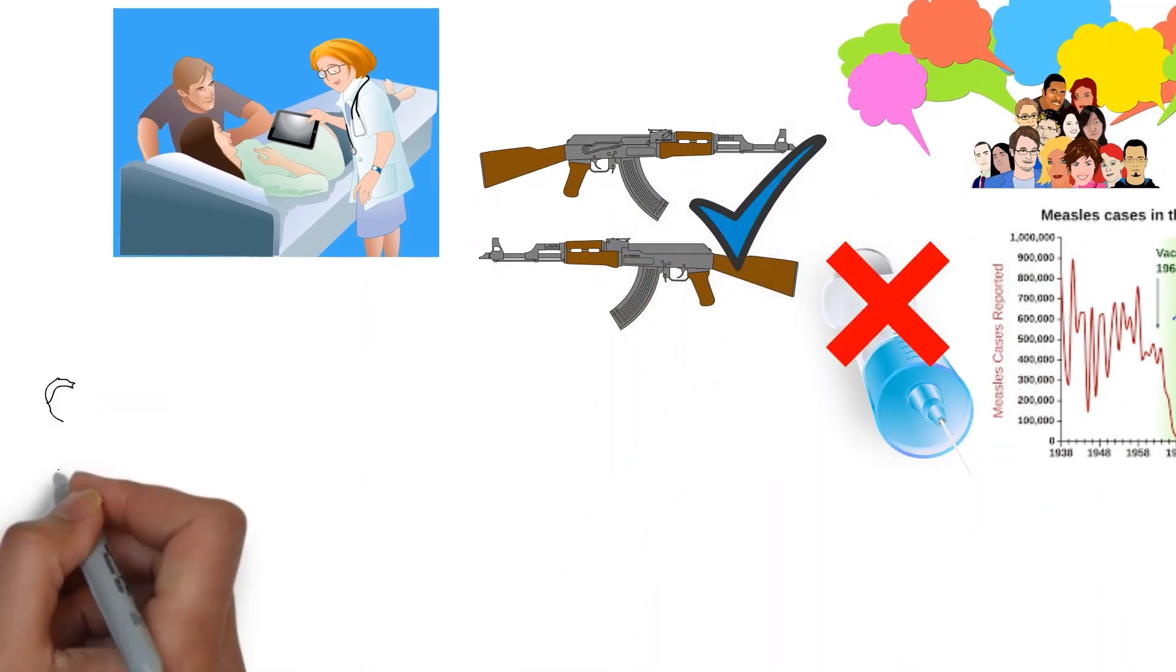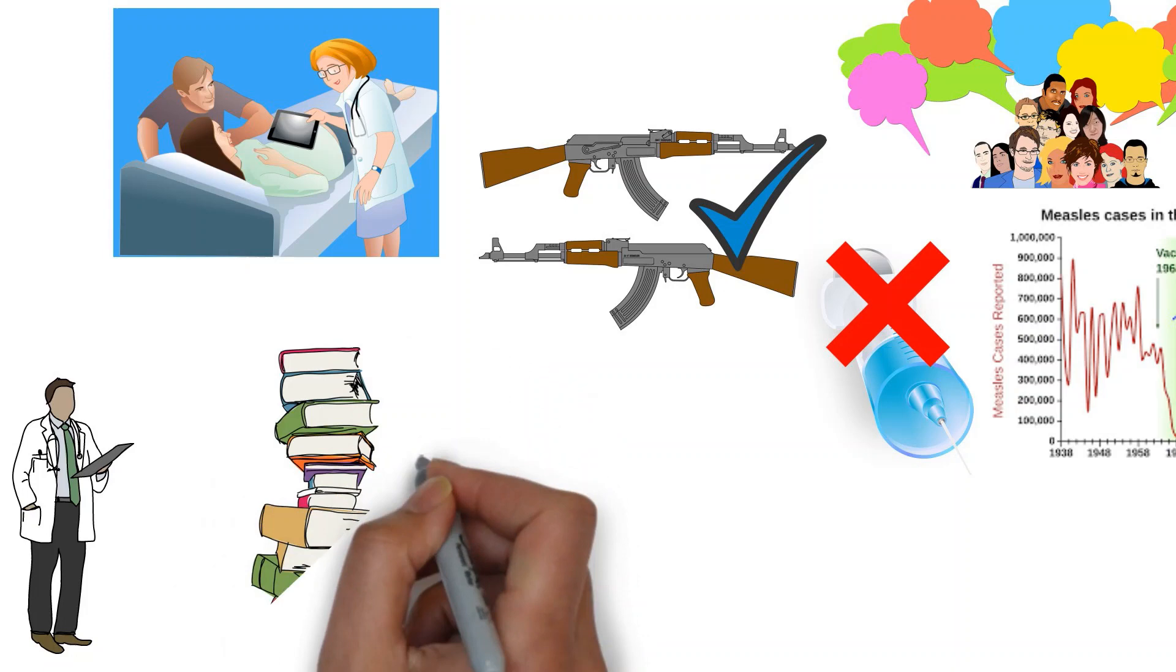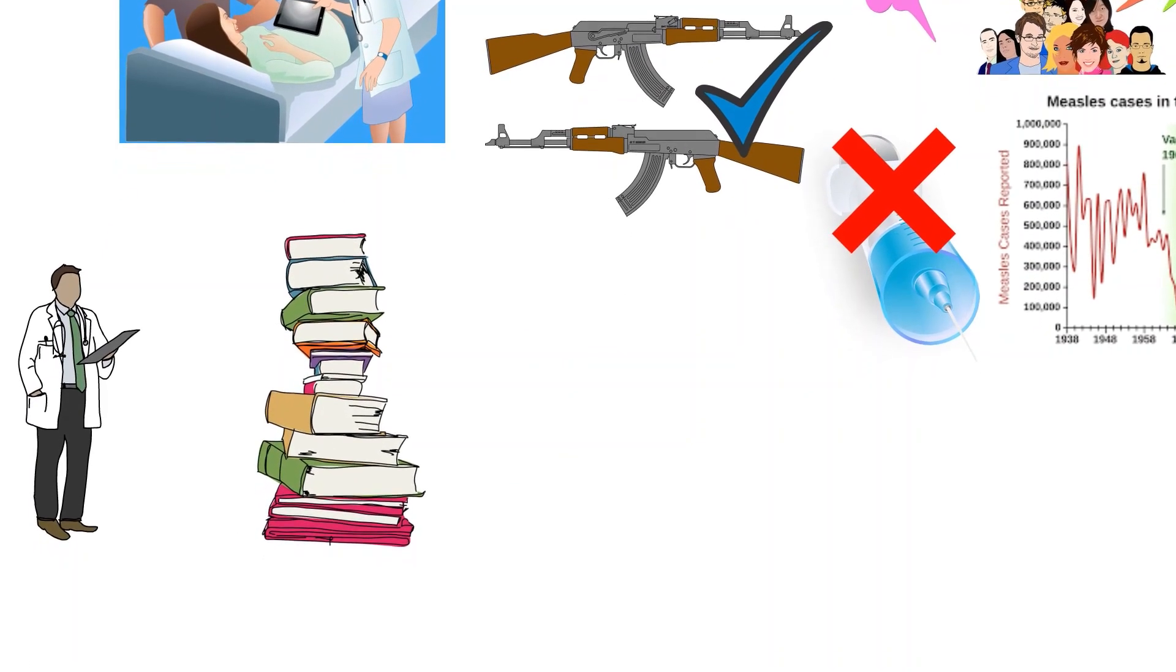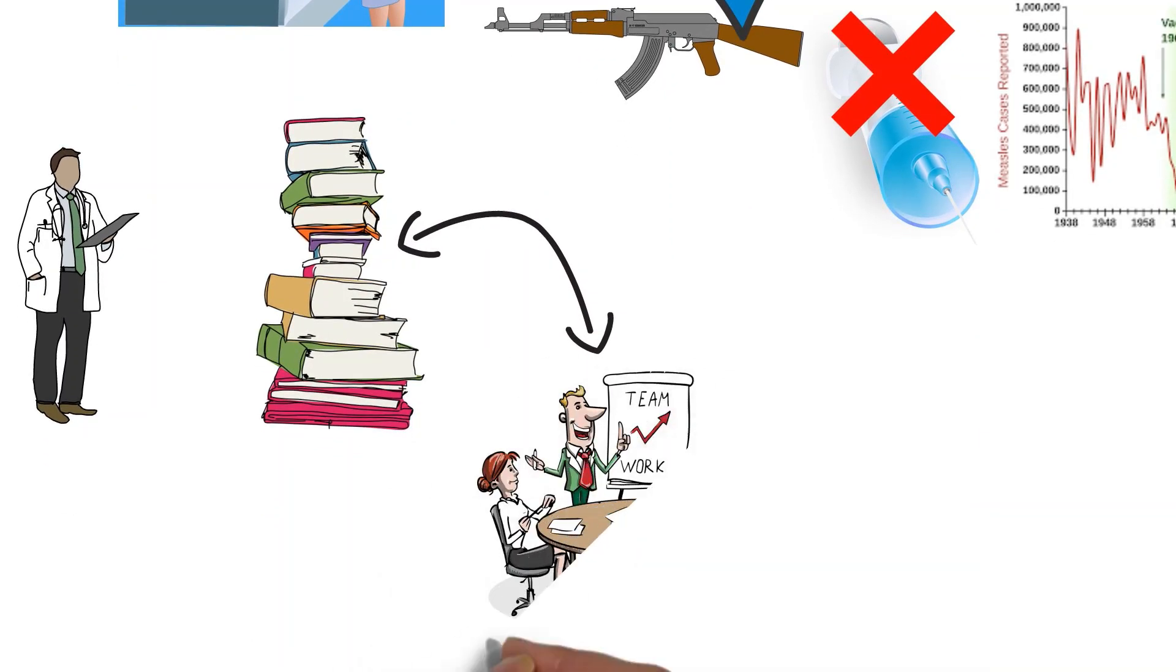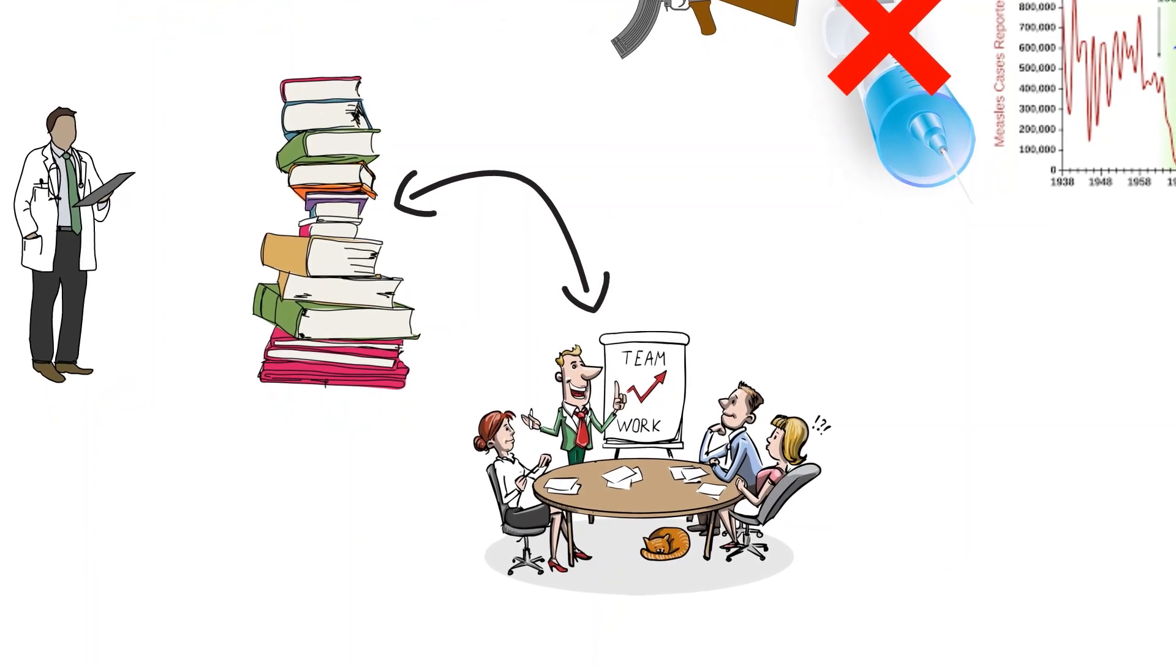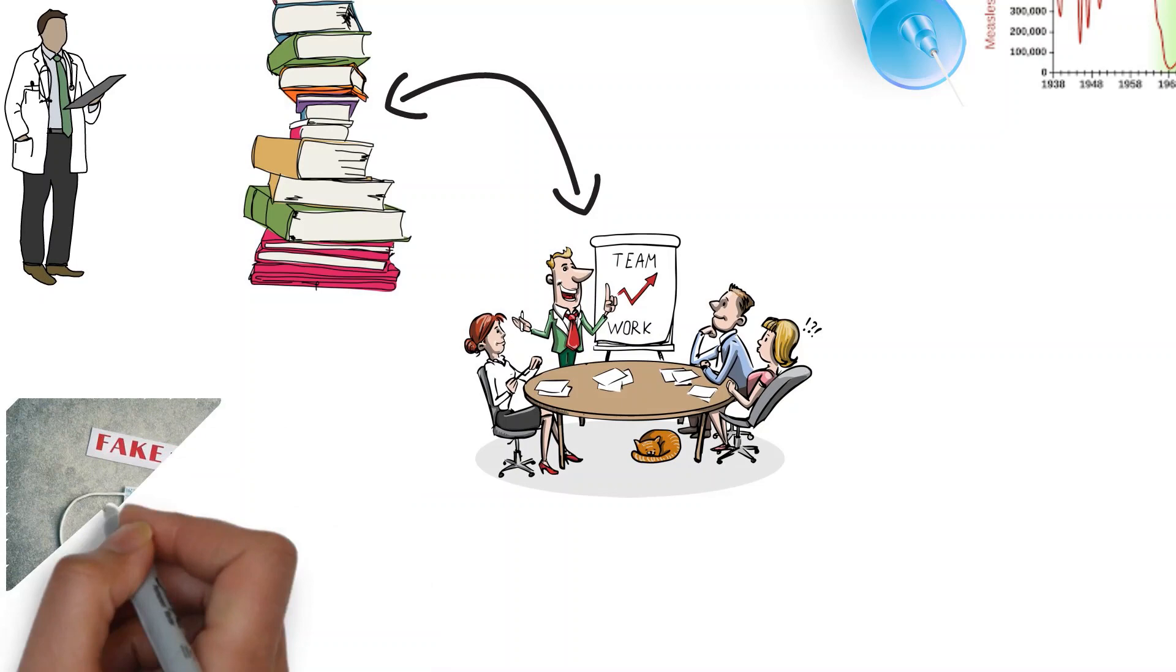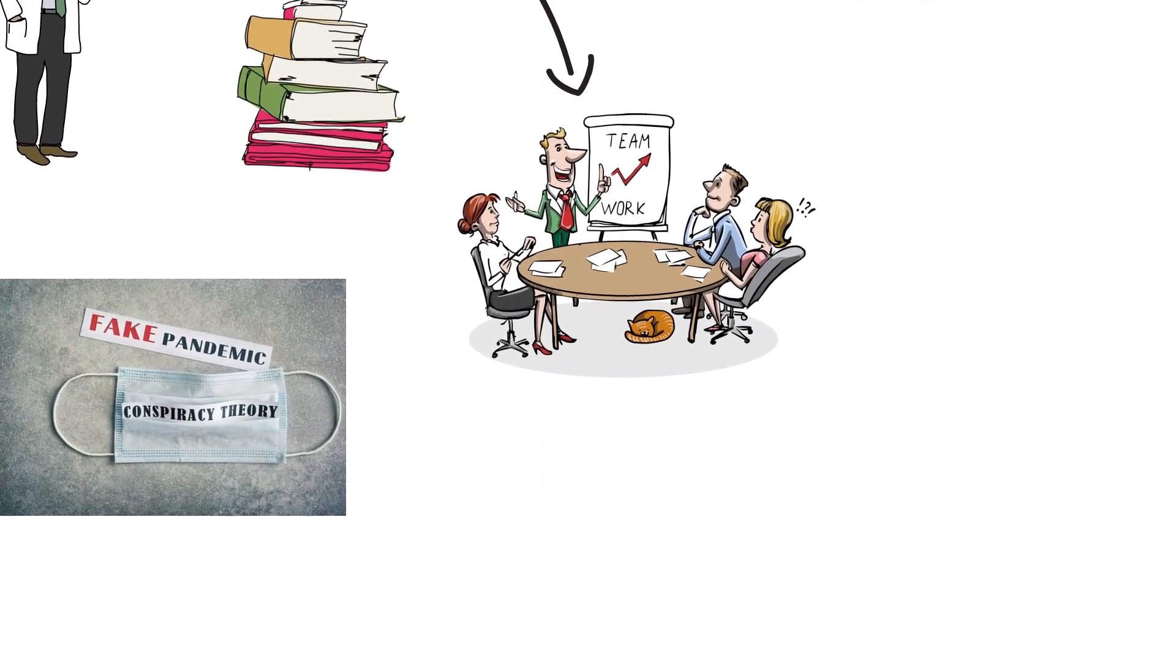But experts say that educating people about the ways misinformation spreads can make a difference. A recent study looked at whether preemptively warning people about the techniques that are used to spread falsehoods can help them gain immunity against fake news. It found that once people were warned about common misinformation techniques, including appealing to people's emotions or expressing urgency in a message, participants were more likely to identify unreliable information. Changing how often we are exposed to inaccuracies can also have an effect.